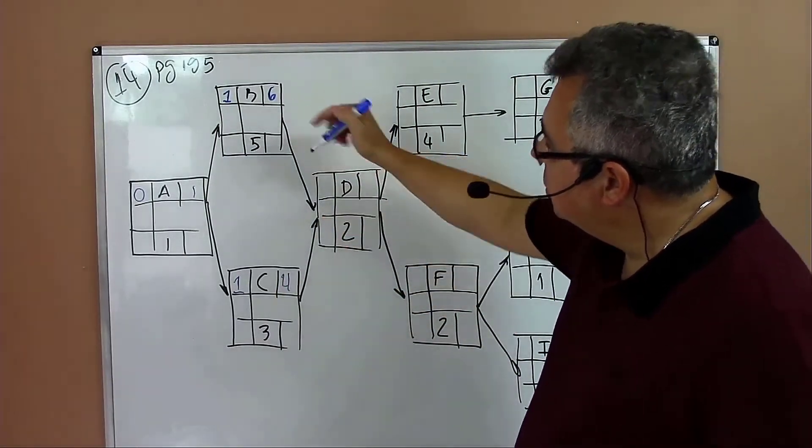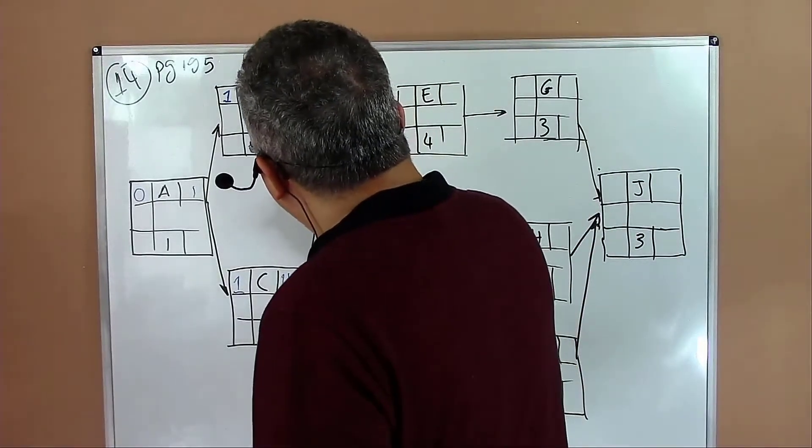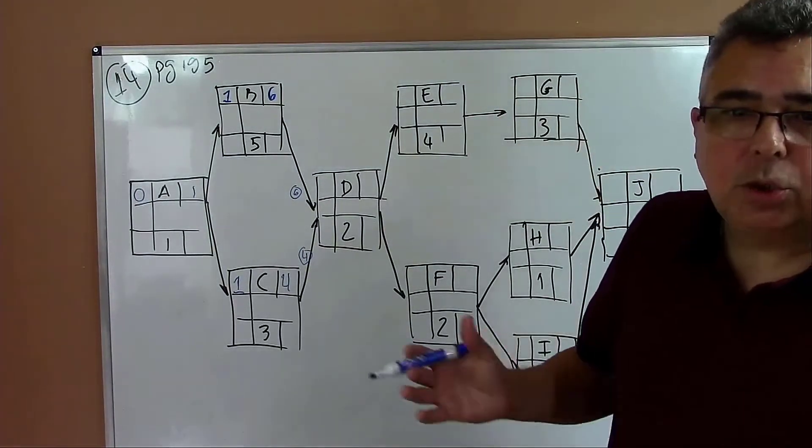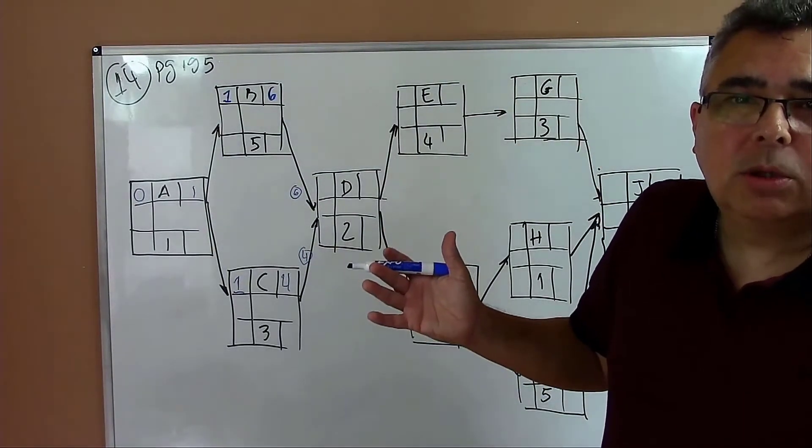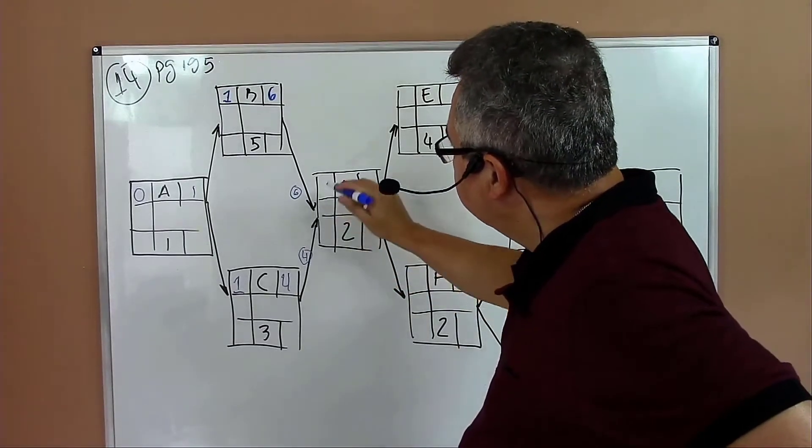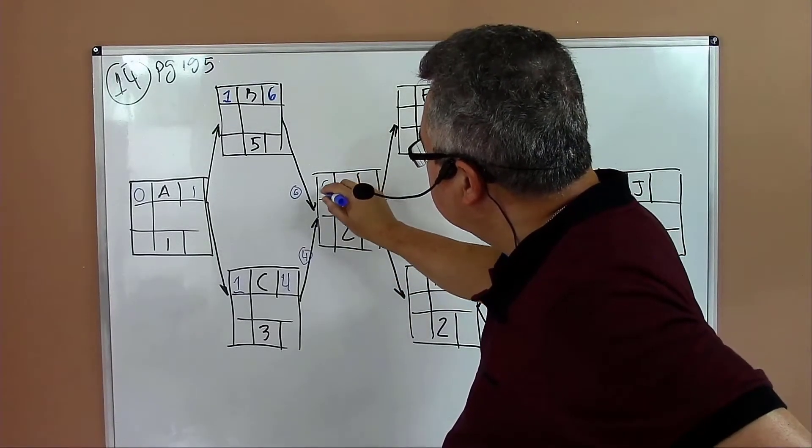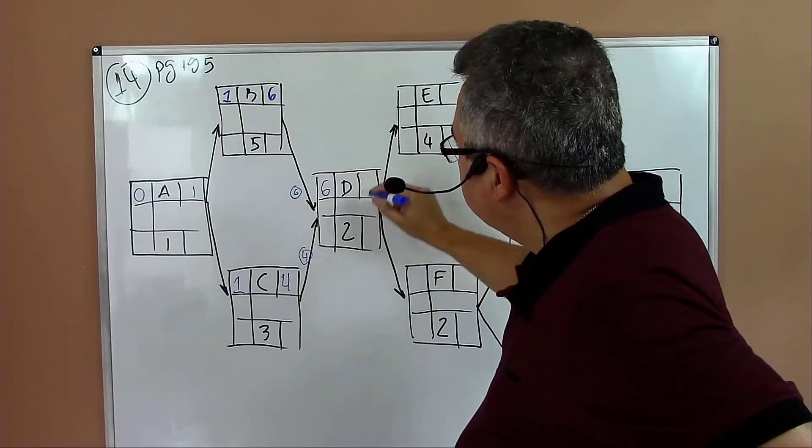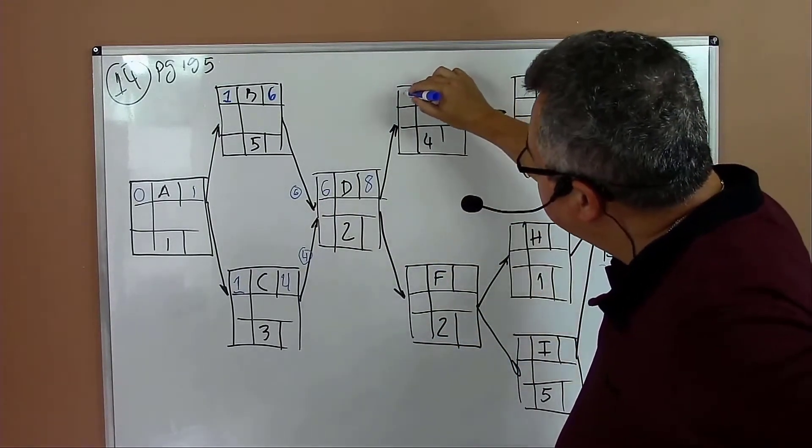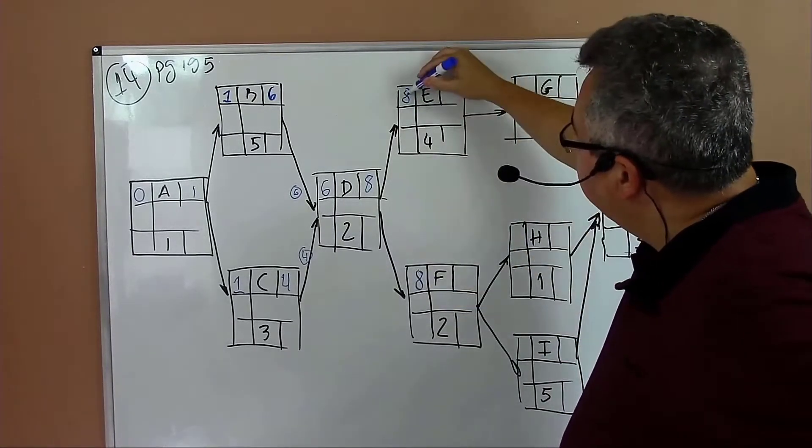One plus five equals six. One plus three equals four. Now to compute the times for activity D, we need to consider six that is coming from activity B and four that's coming from activity C. Because it's a forward path, we should take the highest number. So you take six, then six plus two equals eight.